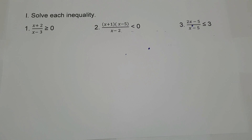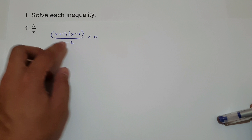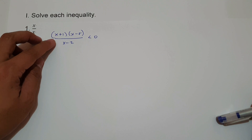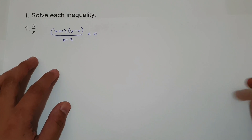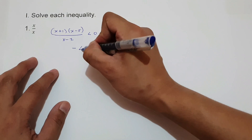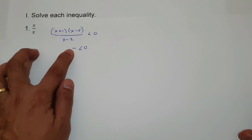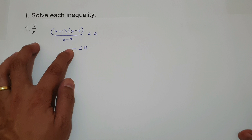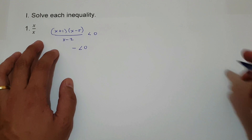On example number 2, we have x plus 1 multiplied by x minus 5, all over x minus 2, less than 0. The inequality symbol is less than, meaning if you simplify this expression, the result must be negative, because all negative numbers are less than 0. Our goal is to make a negative expression.